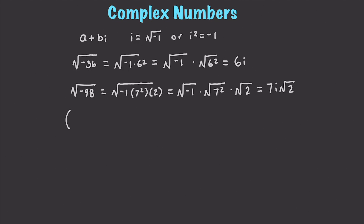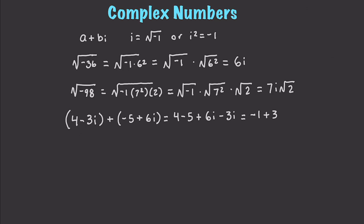Let's say we have (4 − 3i) and we want to add (−5 + 6i). Rearranging the real and imaginary parts: (4 − 5) + (6i − 3i), which gives us a final result of −1 + 3i.